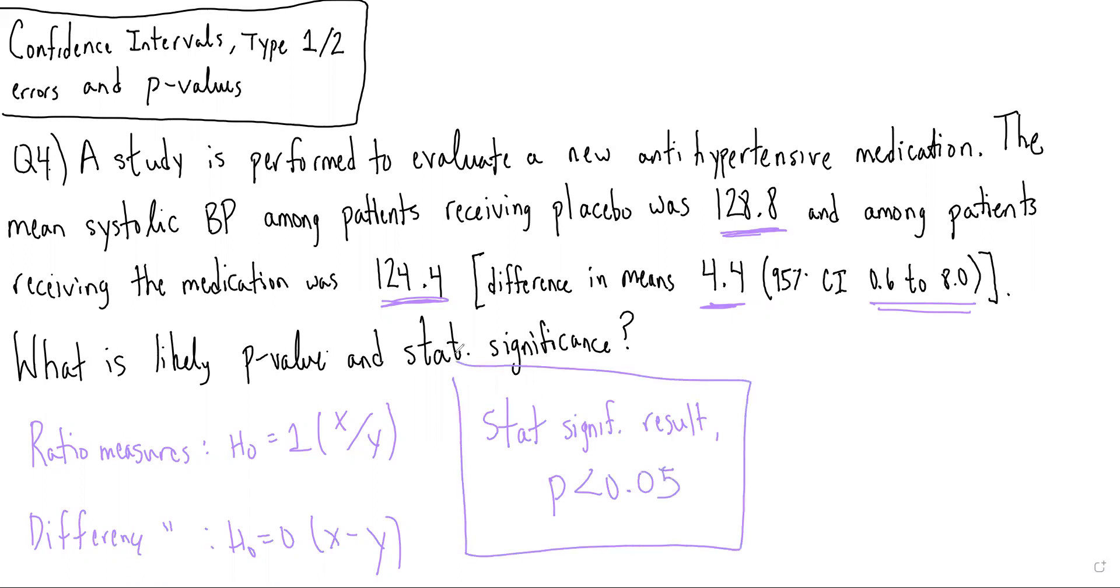When trying to decide whether a confidence interval is significant or not, always try to think, what would the null hypothesis be in this case, and does this confidence interval include or exclude the null hypothesis? If it excludes the null hypothesis, then it is a significant finding, such as in this case.